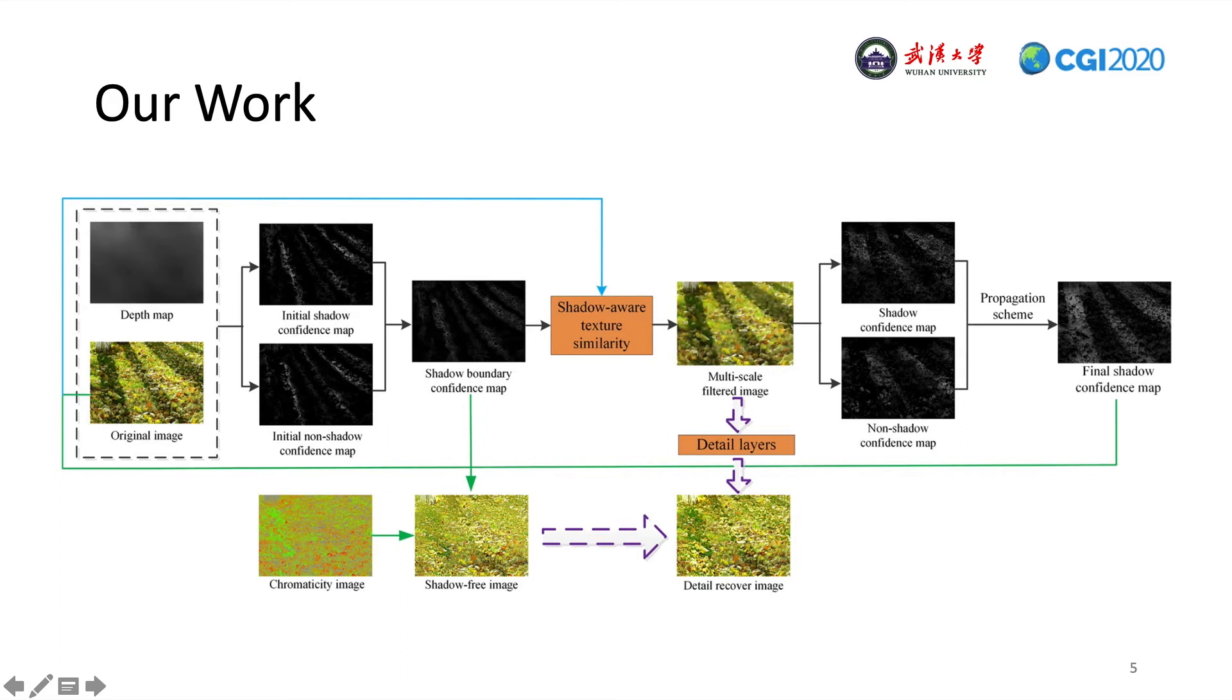To overcome the above challenges, we propose an automatic shadow detection and removal method by jointly exploring color cues as well as depth information. First, based on the observation that shadows essentially appear as smooth and continuous regions, we develop a shadow-preserving filter which effectively removes the image texture while preserving the shadow and shading information.